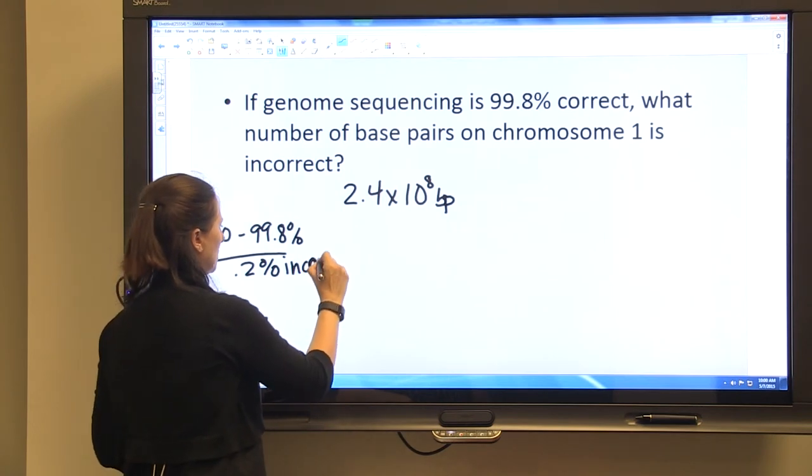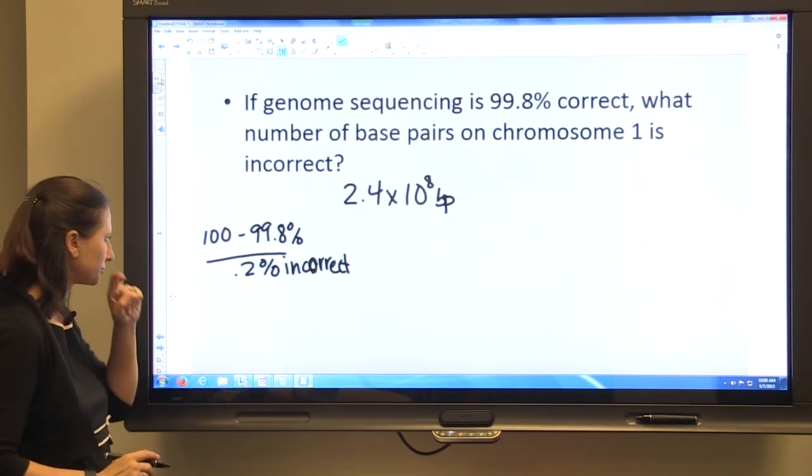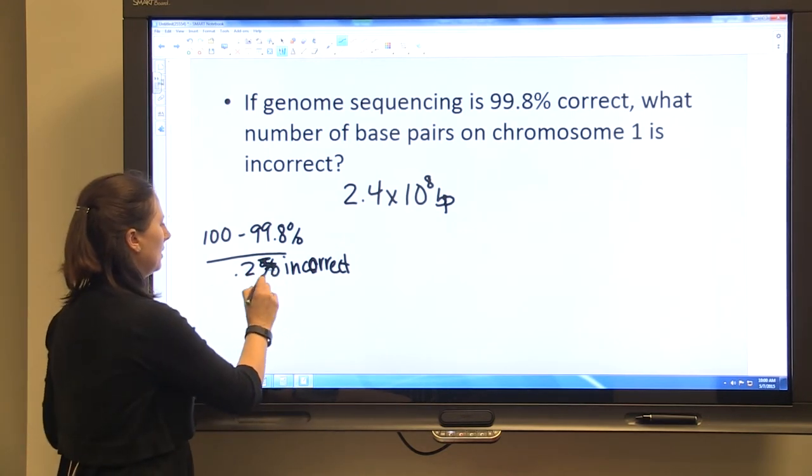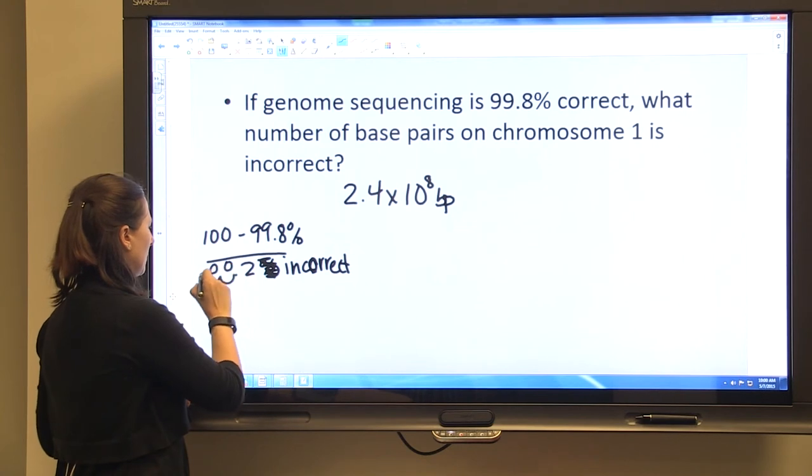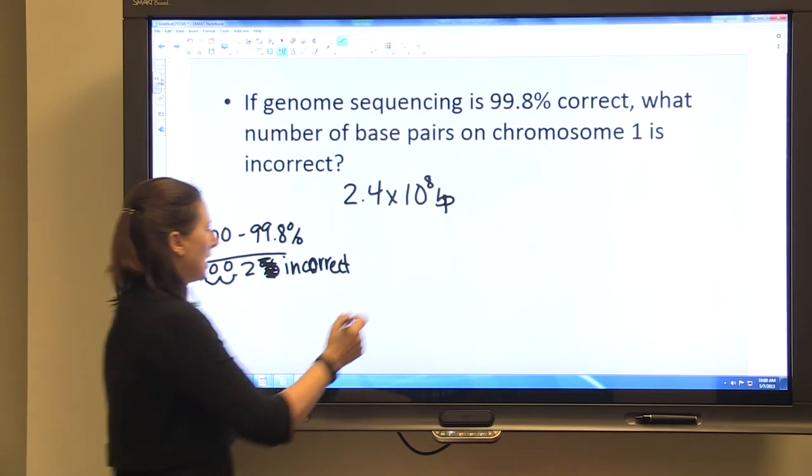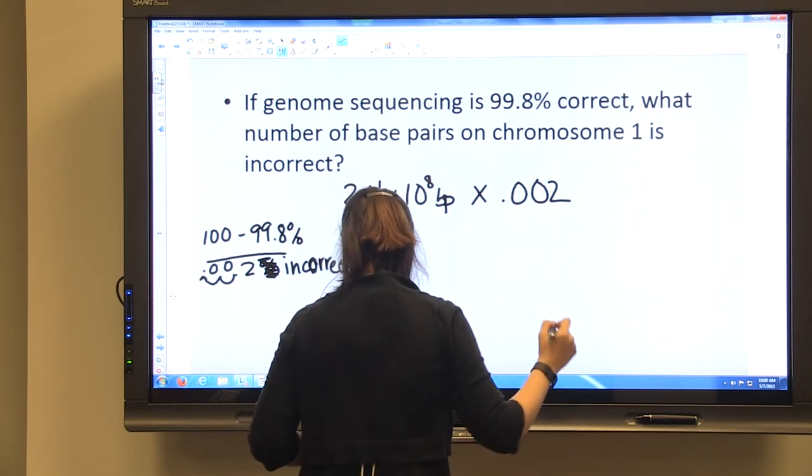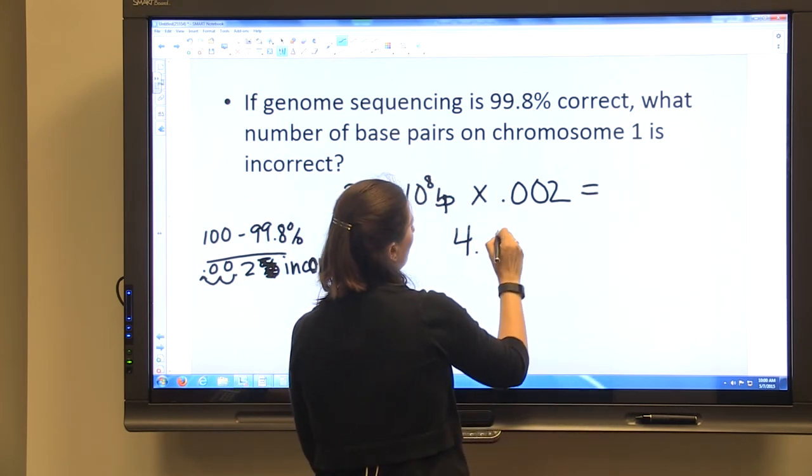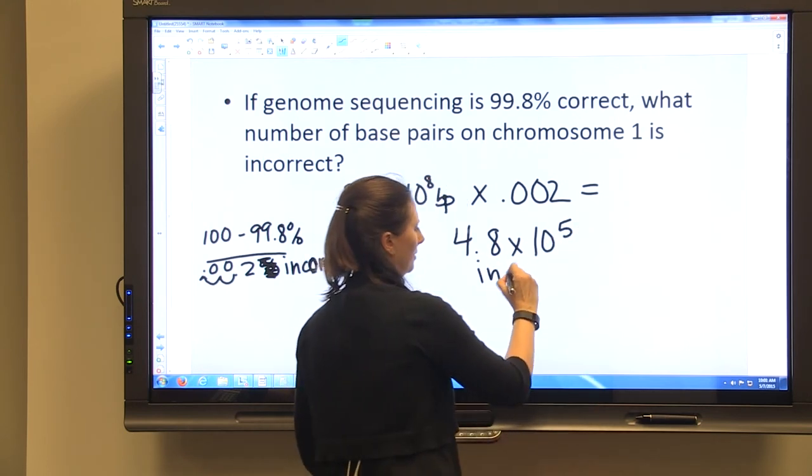And so since the question asks how many are incorrect, we first have to convert our percentage to incorrect sequencing of base pairs. So if we get rid of our percentage sign and move this decimal point two spaces, we have 0.002 that are incorrect. And if you multiply that out, you have 4.8 times 10 to the 5th incorrect base pairs.